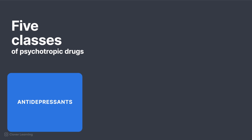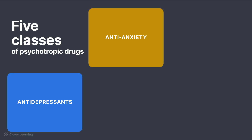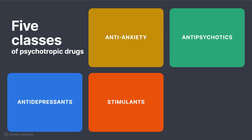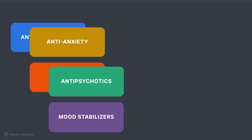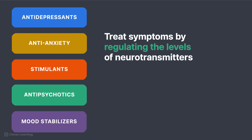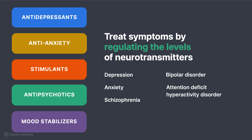The five classes are antidepressants, anti-anxiety, stimulants, antipsychotics, and mood stabilizers. Each class treats symptoms by regulating the levels of neurotransmitters associated with a specific mental disorder, such as depression, anxiety, schizophrenia, bipolar disorder, or attention-deficit hyperactivity disorder. This lesson focuses on antidepressants, anxiolytics, and stimulants.